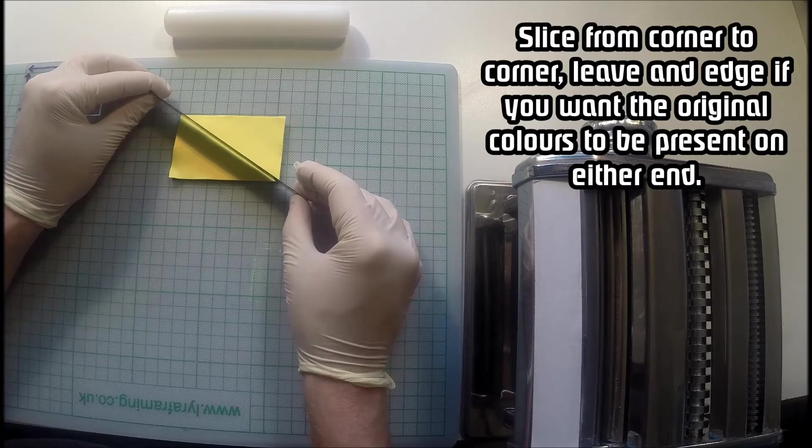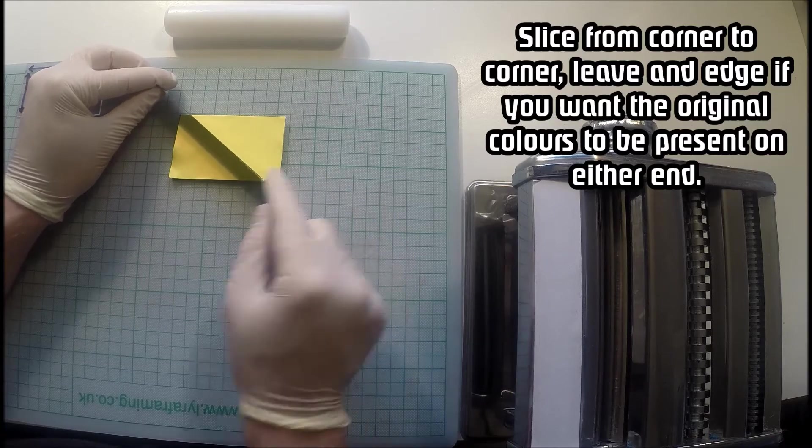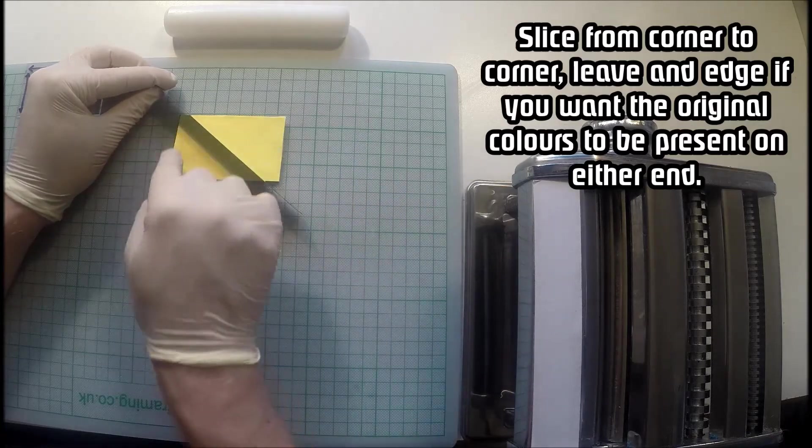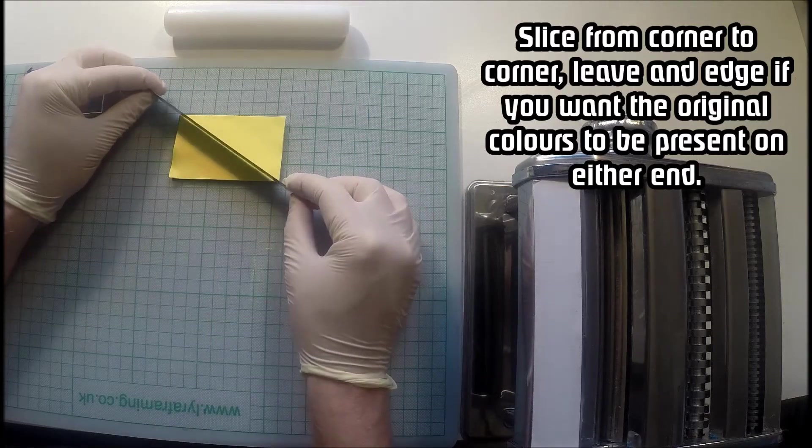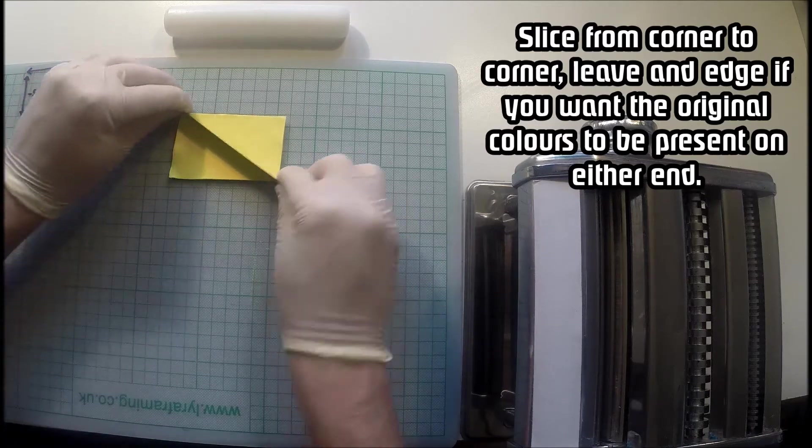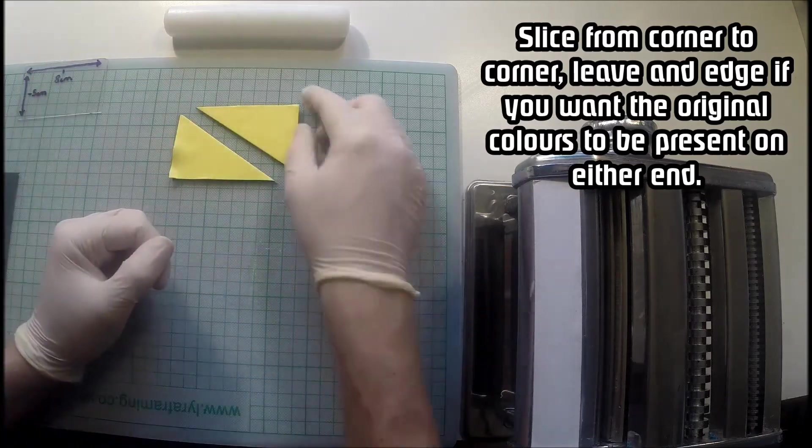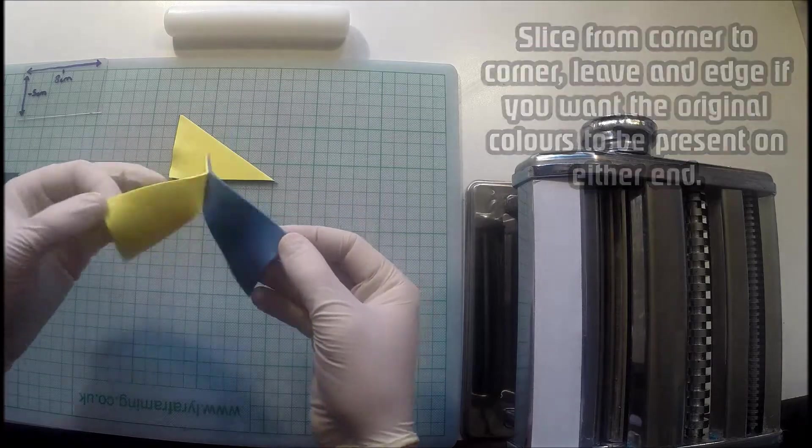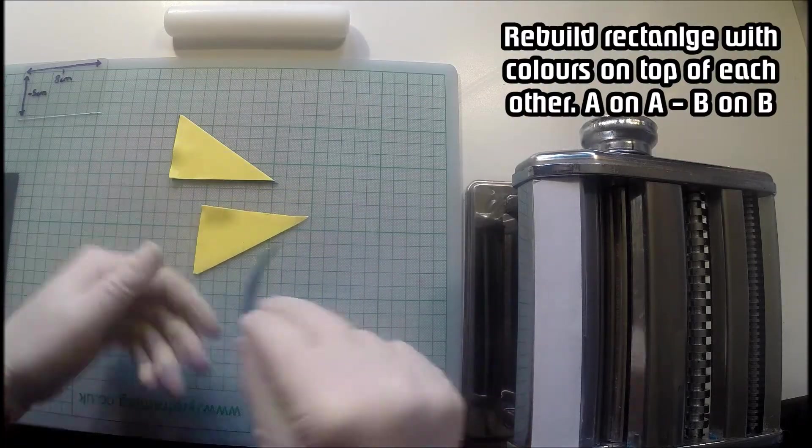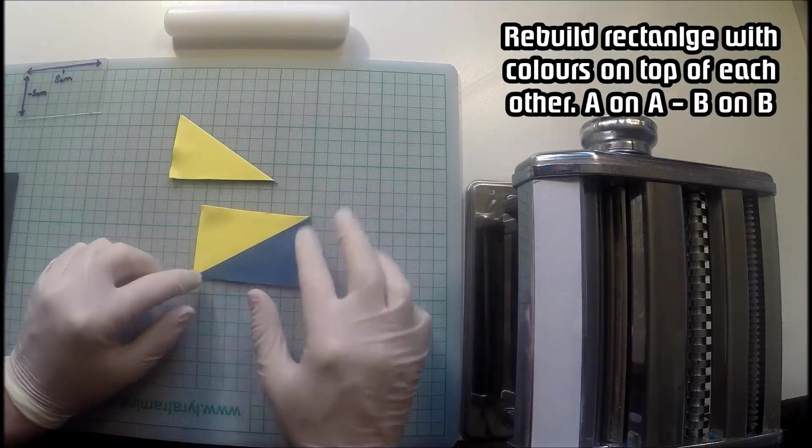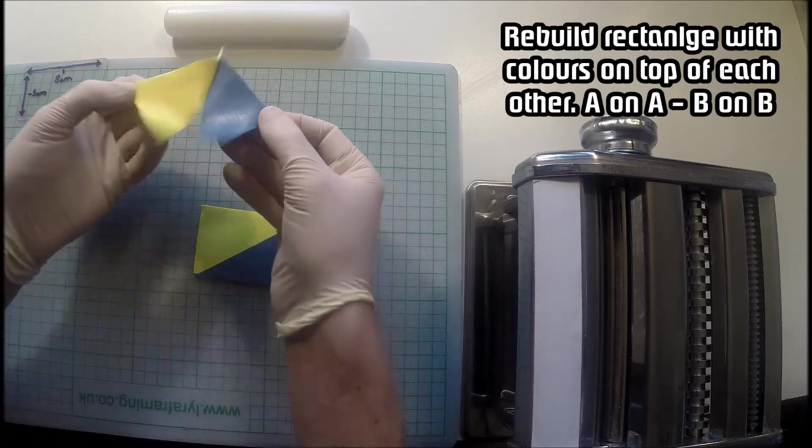Then you want to make a cut from corner to corner for a perfect graduation, or if you leave a little bit of a gap on either side you'll end up with a bit of original color on either end. But I don't want that so I'm just cutting from corner to corner and this is how you build your rectangle with one color in one corner and the other color in another corner.